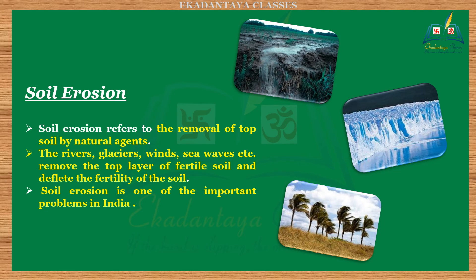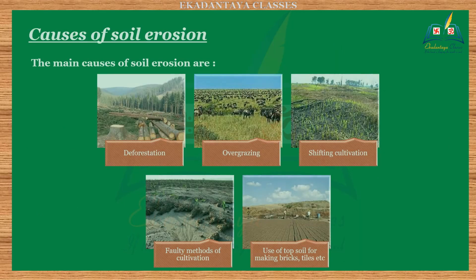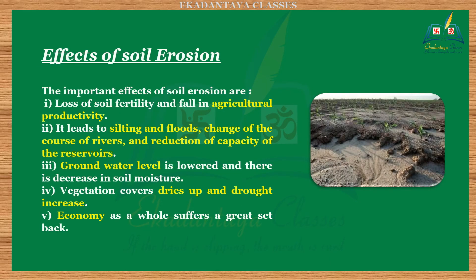Soil erosion: soil erosion refers to the removal of topsoil by natural agents. Rivers, glaciers, winds, sea waves, etc. remove the top layer of fertile soil and reduce the fertility of the soil. Soil erosion is one of the important problems in India. Causes of soil erosion: the main causes are — a) deforestation, b) overgrazing, c) shifting cultivation, d) faulty methods of cultivation, and e) use of topsoil for making bricks, tiles, etc.